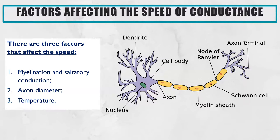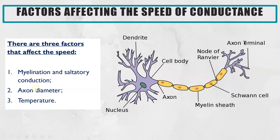So, factors that affect the speed — there are three key factors that you need to be aware of. Number one is whether the axon is myelinated, which results in saltatory conduction. Number two is the diameter of the axon, which is the long thin cable connecting the axon terminal to the cell body. And finally, the temperature.